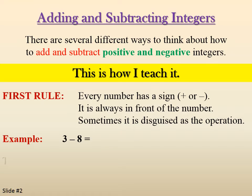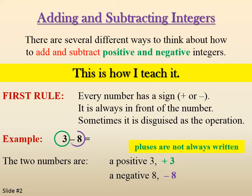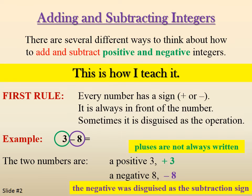3 minus 8. The two numbers are a positive 3 — even though there's no plus sign written, it's still a positive 3. Pluses are not always written for the first number in a sequence. And a negative 8. The negative was disguised as the subtraction symbol. So it looks like 3 minus 8, but it's actually a positive 3 and a negative 8. Every number has a sign; it's always in front, and sometimes it's disguised as the operation.